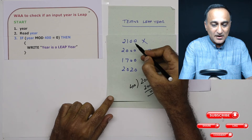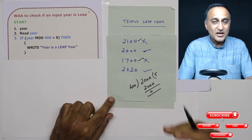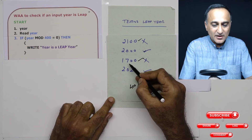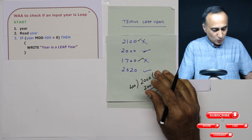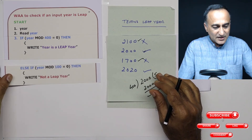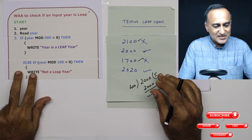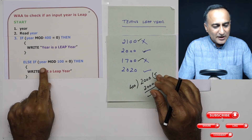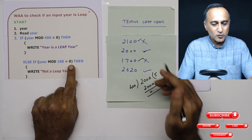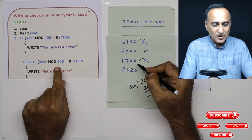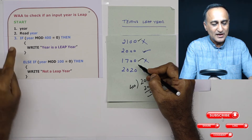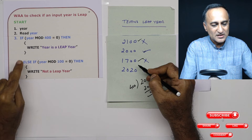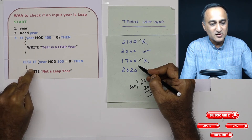Now I need to eliminate century years like 2100 and 1700. Because if I don't eliminate them and try to check divisibility by four, it will show both as leap years when they are not. So the next step is an else if condition: if year mod 100 is equal to zero, then years like 2100 and 1700 will have a remainder of zero, and I'm going to say not a leap year. If the first condition executes, this else if will never execute; only if the first is false will it check this one.